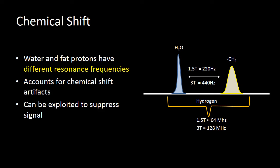At 1.5 tesla, that separation between the frequencies is 220 hertz, and at 3 tesla, it's 440 hertz.